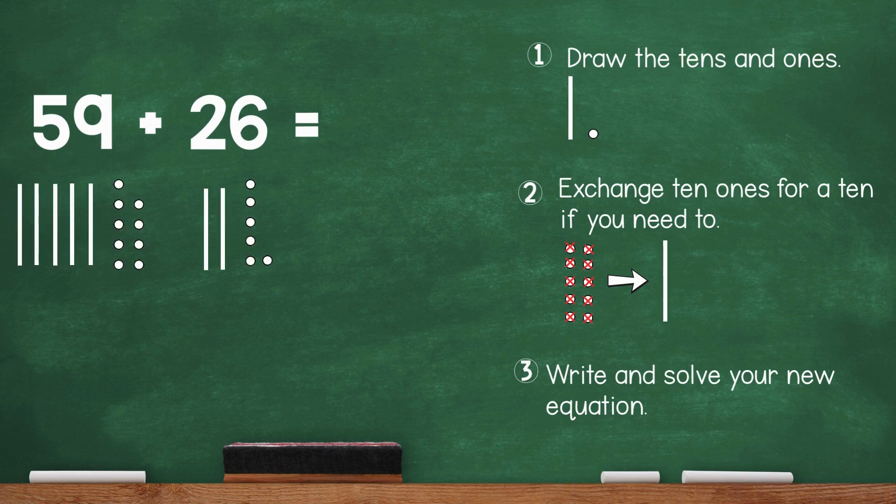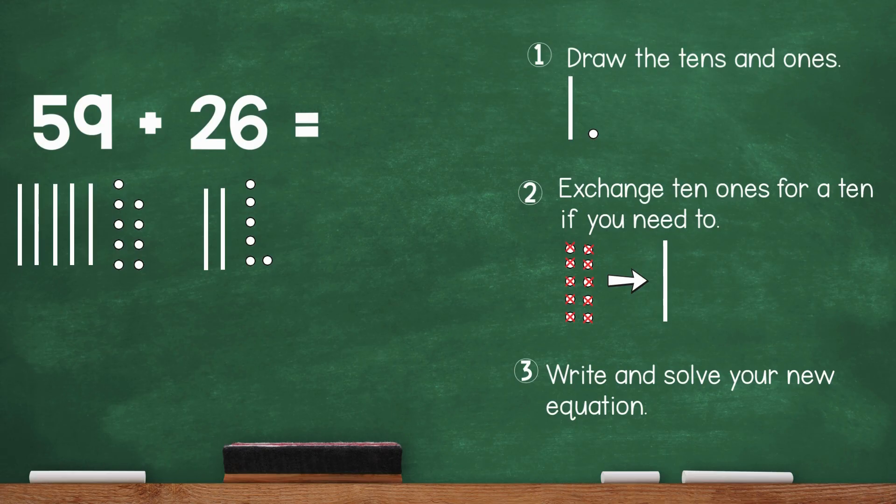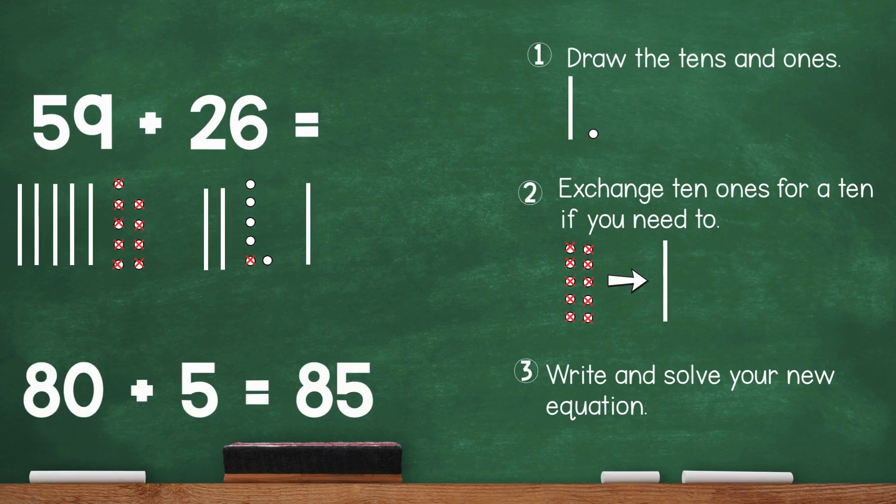Here's the drawing for 59 plus 26. When I added the ones, I had 15. I exchanged 10 ones for a 10 by crossing out 10 of the ones and exchanging them for a 10. Finally, I wrote and solved a new equation. 80 plus 5 equals 85. So, 59 plus 26 equals 85.